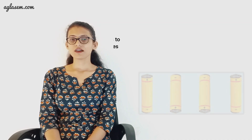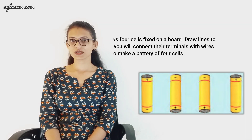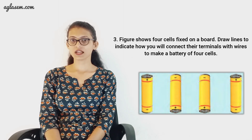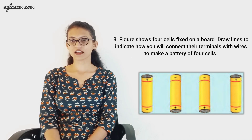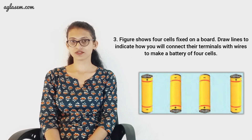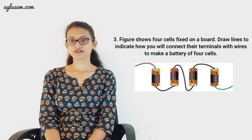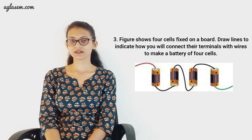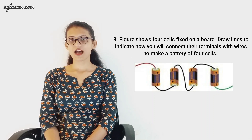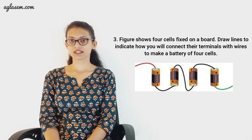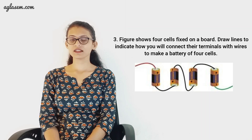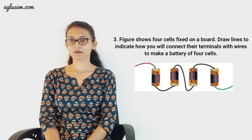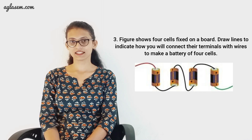Moving to question three: the figure shows four cells fixed on a board. Draw lines to indicate how you will connect their terminals with wires to make a battery of four cells. To make it a battery of four cells, we need to connect the negative terminal of one cell to the positive terminal of the next cell using a wire. After connecting them, your battery will look like as shown.